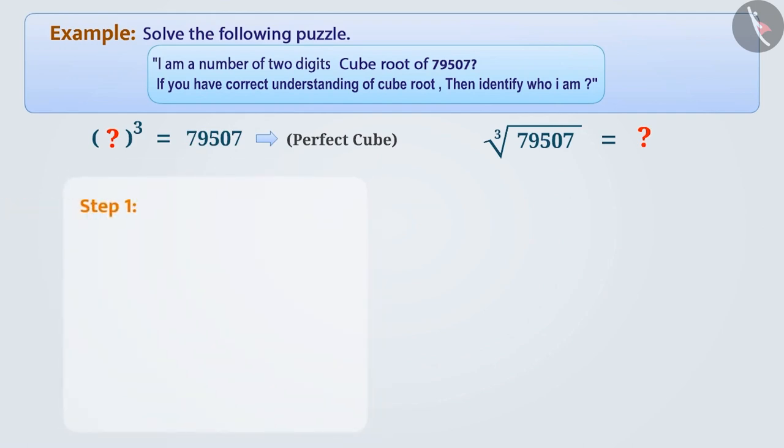Step 1: In the first step, we make groups of 3 from the right of the given number. Like here, we will make a group of 507 and 79 in another group.